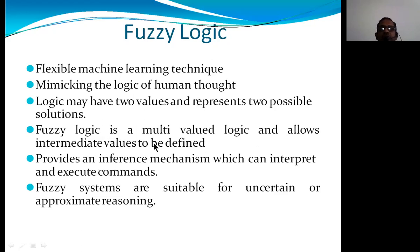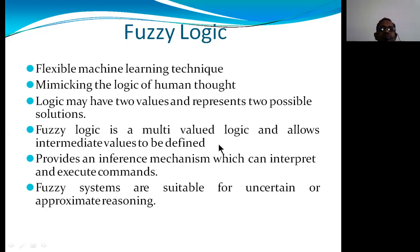For example, if we are looking at the discrimination between cold and hot — how much it is cold, how much it is hot — so many intermediate values will be considered: cold, very cold, chilled, warm, very hot. So many values come into consideration for temperature, which are called intermediate values. Fuzzy logic is a multi-valued logic that allows intermediate values to be defined using different membership functions, and provides an inference mechanism to interpret and execute commands.